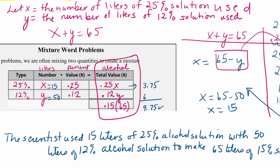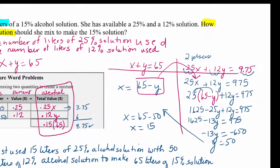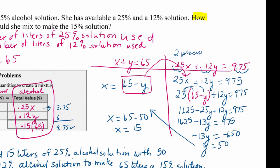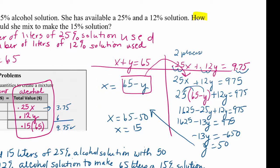The scientist used 15 liters of 25% alcohol solution with 50 liters of the 12% solution to make 65 liters of 15% solution. After substituting 65 minus y in for x and distributing the 0.25, combining terms led to y equals 50.